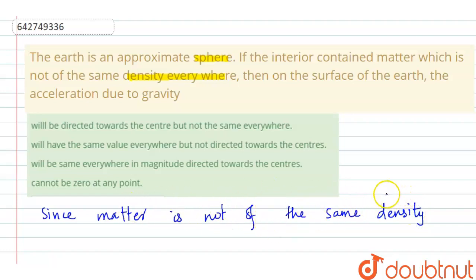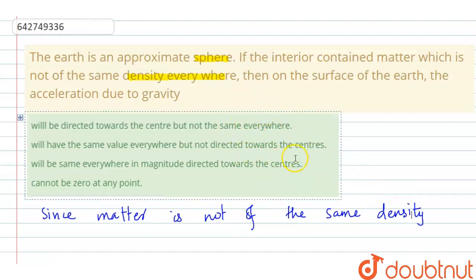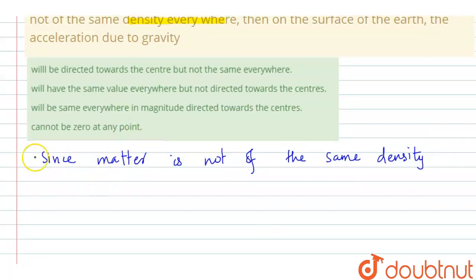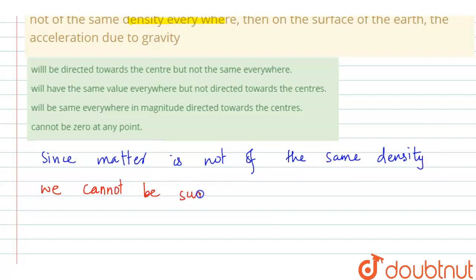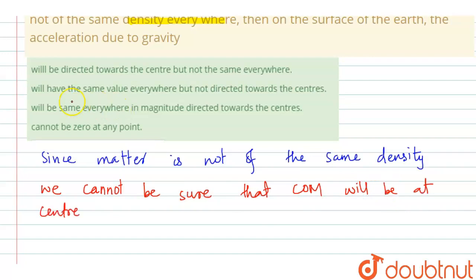If the center of mass is not at the center of the sphere, then the acceleration due to gravity will not necessarily be directed towards the geometric center — it will be directed towards the center of mass. So any option claiming gravity points toward the center would be false.